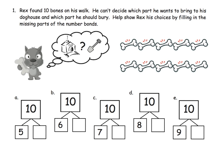Now, the actual lesson. This says, Rex found ten bones on his walk. He can't decide which part he wants to bring to his doghouse and which part he should bury. Help show Rex his choices by filling in the missing parts of the number bonds.